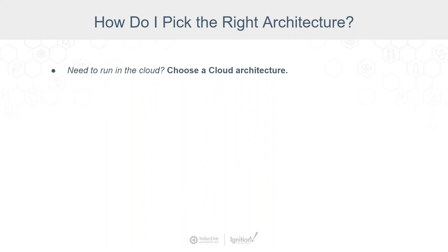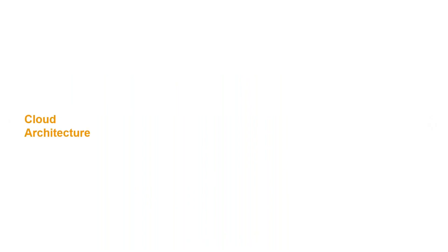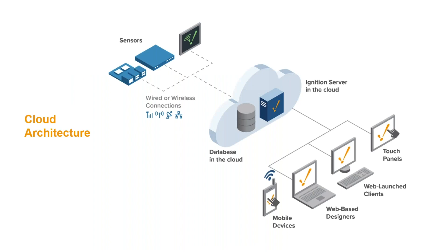Next question: do I need to run on the cloud? Choose a cloud architecture. This is a quick example of what a cloud architecture can look like, where you have the Ignition server in the cloud along with the database, and then different clients and designers are connected up to that. There's also some connection down to sensors in some way or at different locations.